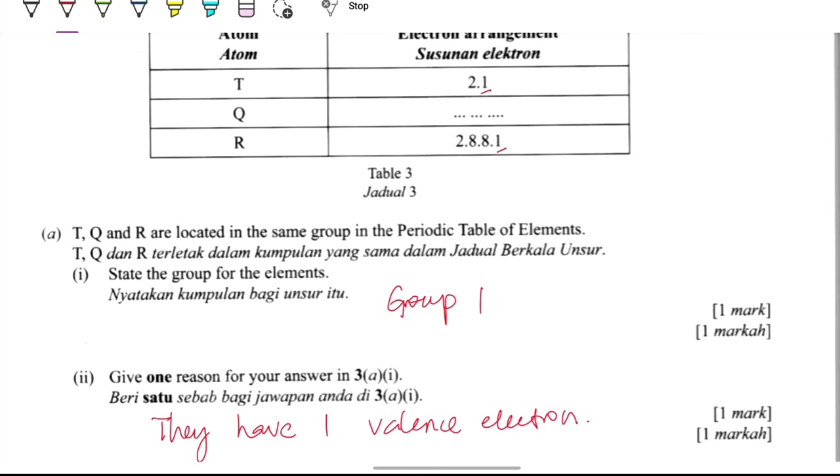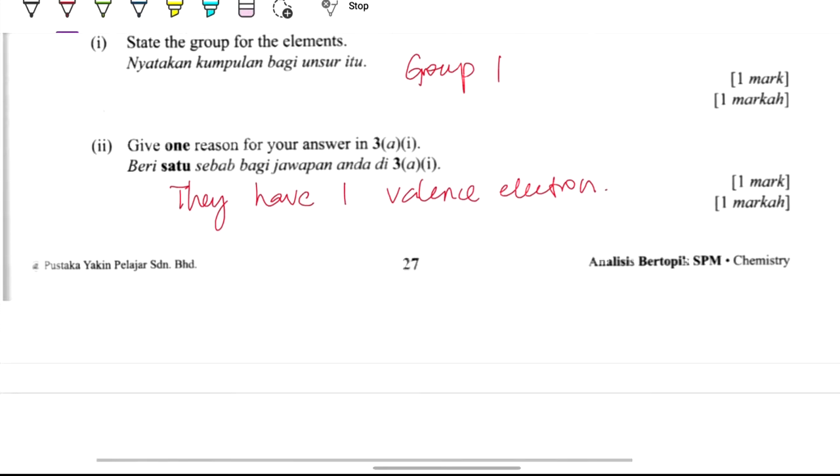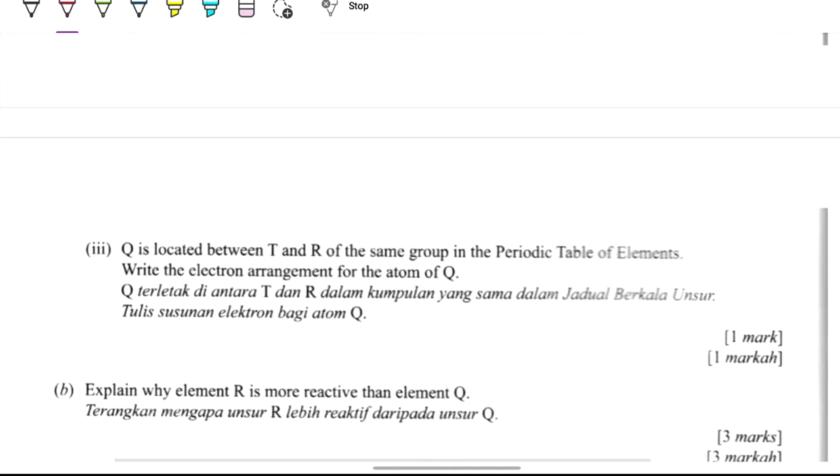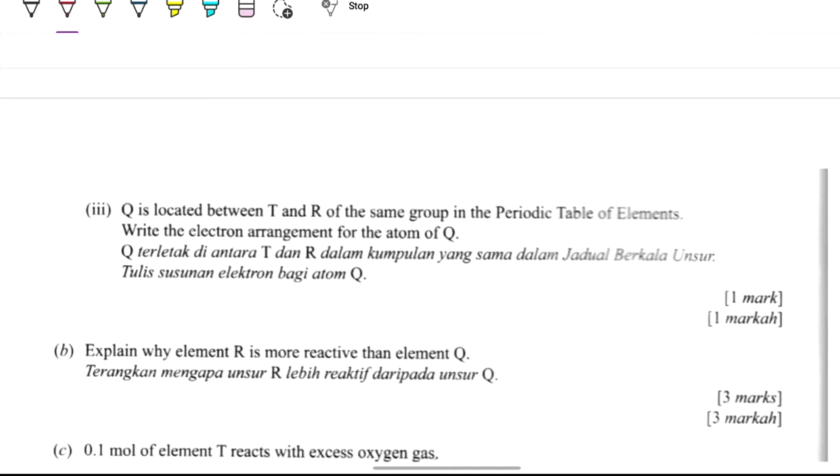If like this, we know that Q will be 2,8,1 as the electron arrangement. Write the electron arrangement for Q. Already mentioned just now. It's 2,8,1.